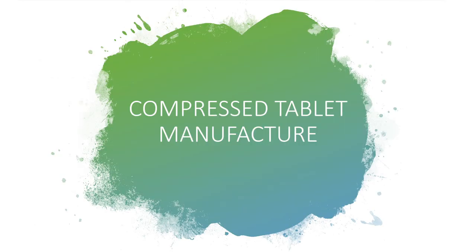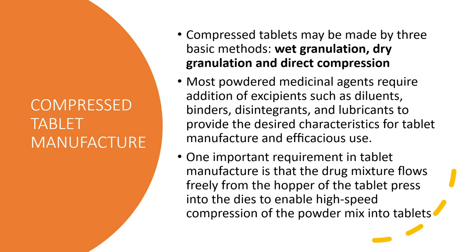Next is your compressed tablet manufacturing. There are three methods of manufacture: wet granulation, dry granulation, and direct compression. The most common are wet and dry. Direct compression is reserved for special drugs which have special physical characteristics. The most important part of the formulation is that there is free flow from the hopper towards other parts of the production line — you do not want a production line to stop because your raw materials become stuck.